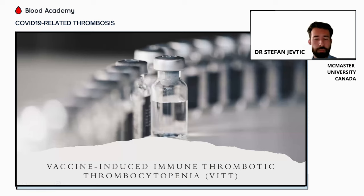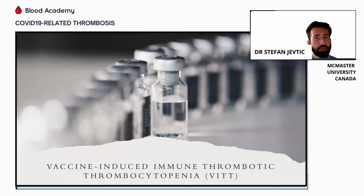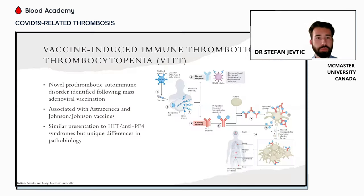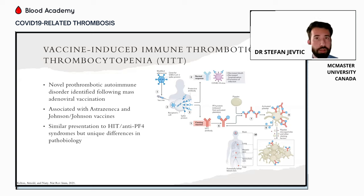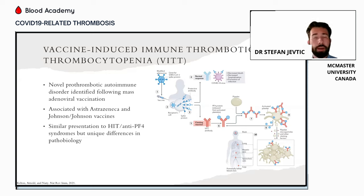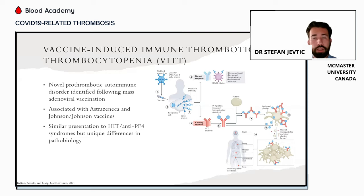Moving on to vaccine-induced immune thrombotic thrombocytopenia, or VITT — this is a separate prothrombotic disorder, unrelated to COVID-19 infection but associated with COVID-19 vaccination. It was discovered during the mass vaccination campaigns with adenovirus COVID-19 vaccines, particularly AstraZeneca and Johnson & Johnson. It initially presented with severe thrombocytopenia, catastrophic thrombotic events, and very much like a heparin-induced thrombocytopenia or HIT-type reaction, which facilitated our understanding of diagnosis and management.